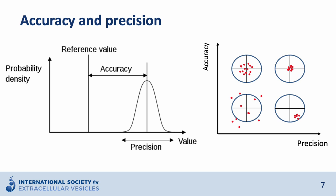Accuracy tells us how far the mean value of the measured values is from the reference value. On the right you can see a graphical representation of these two properties. In case of low accuracy and low precision, the results of independent measurements will show high variation. In case of high accuracy but low precision, the data points will scatter around the reference value. In case of low accuracy and high precision, the data points will show small variations but their mean value will show a significant deviation from the reference value. In the ideal case of high accuracy and high precision, the data points will show small variations and they will be centered around the reference value.